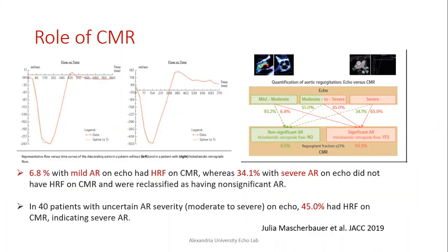Regarding the role of CMR — a paper published in JACE in 2019 assessed holodiastolic retrograde flow in the descending aorta compared to echo parameters for aortic valve regurgitation. They found that more than 6% with mild AR by echo had holodiastolic flow reversal on CMR. However, more than 30% of patients with severe AR by echo did not have holodiastolic flow reversal on CMR, being classified as non-significant AR. In 40 patients with uncertain AR assessed as moderate to severe by echo, approximately 45% had holodiastolic flow reversal on CMR indicating severe AR.